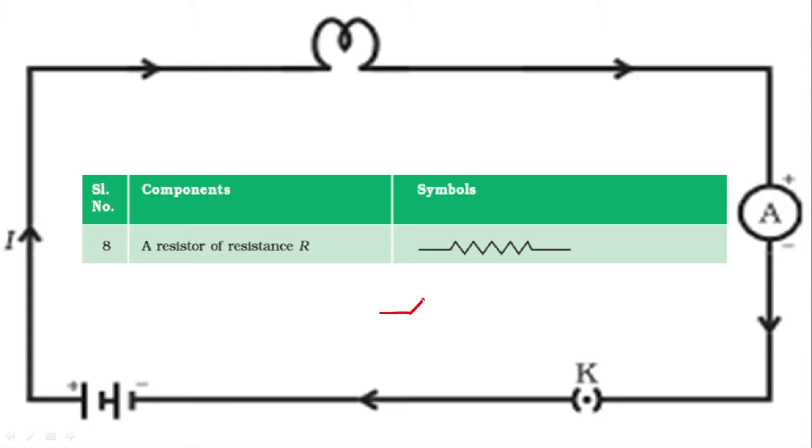If I talk about variable resistance or rheostat, we symbolize it in such a manner like this. We just have to put an arrow in the symbol of the resistance, which symbolizes it as a rheostat. Rheostat is a variable resistance, means you can find a particular value resistor in the market, but rheostat is a device in which we can vary resistance by scrolling the bar. We can vary resistance in rheostat. Or you can also symbolize it like this.